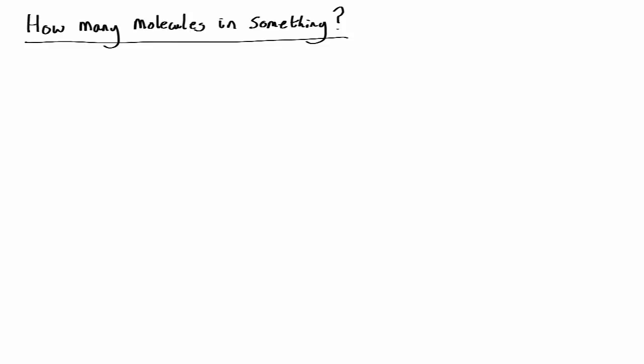So how do you do this? The basic idea is that the number of molecules in something is equal to the mass of that something divided by the mass of one molecule.